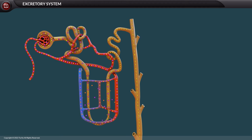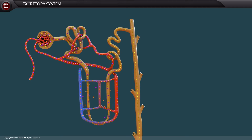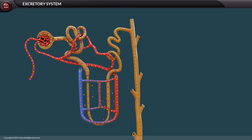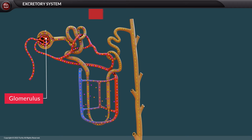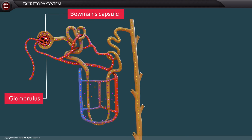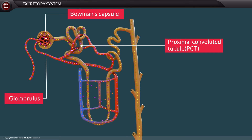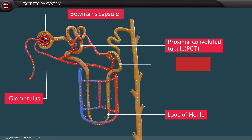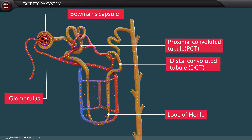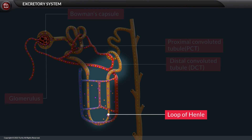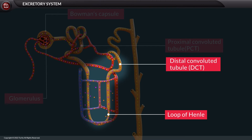Millions of functioning units called nephrons are responsible for the filtration of blood and the regulation of chemicals. A nephron consists of a filtering unit of tiny blood vessels called a glomerulus, present in a Bowman's capsule, attached to a tubule. The tubule has three distinct regions: the proximal convoluted tubule (PCT), loop of Henle, and the distal convoluted tubule (DCT). The loop of Henle connects the PCT to the DCT.